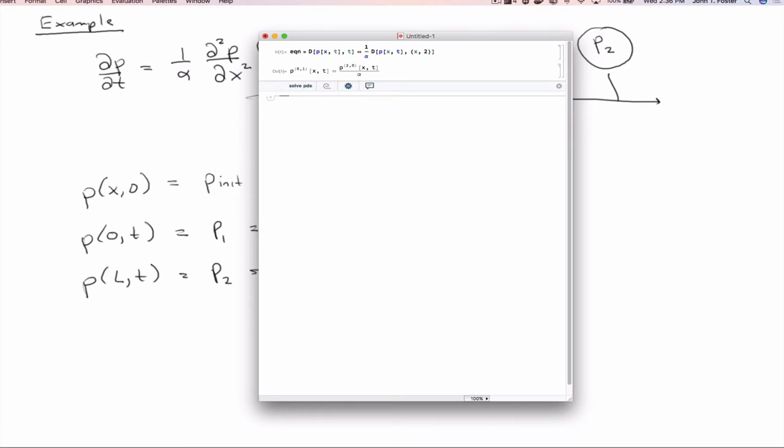And what we're going to say then is dsolve equation. And then we have to give the boundary conditions. And so for all x at time t equals zero, we have p_init. For x equal to zero and all time, we have p1. And for x equal to L and all time, we have p2. And we'll solve this for p at x and t where x and t are the variables.